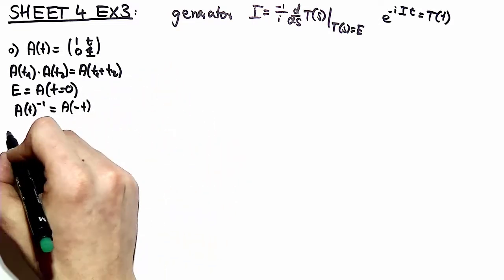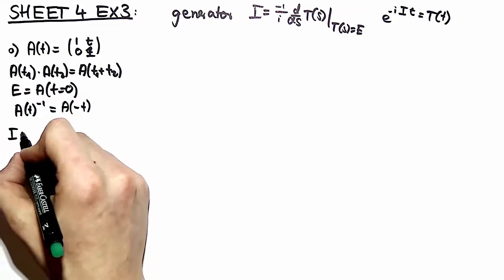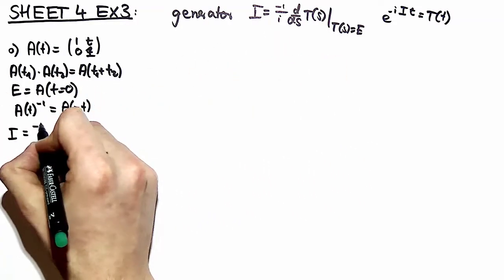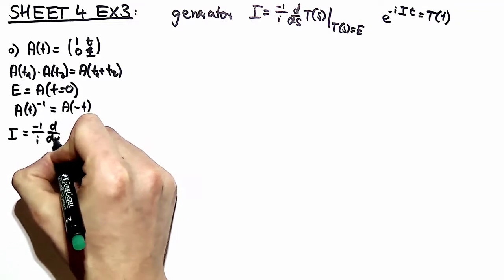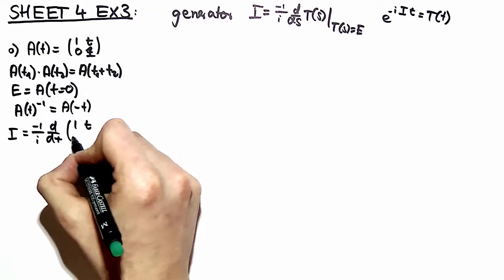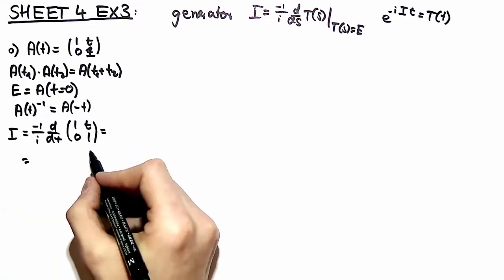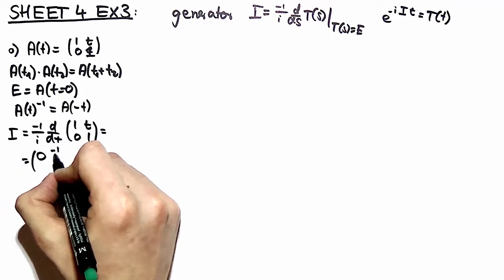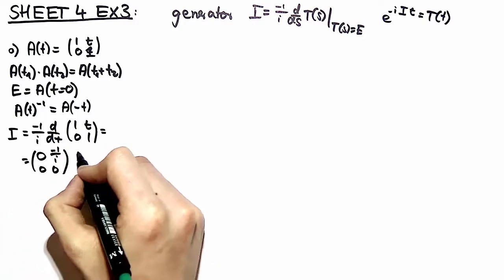Now we want to find the generator of this group. This is minus one over i, d by dt, of the matrix representation (1, t; 0, 1). This is nothing else than a matrix with minus one over i in the upper right corner.